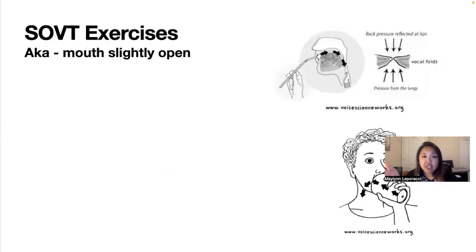Once you start to feel like the sound is starting to let go and you're not in control of where it wants to go into that higher range, that's when you use what I mentioned a couple of minutes ago — also known as semi-occluded vocal tract exercises, SOVTs. Basically, this is a fancy way of saying your mouth is partially open. That's what SOVTs are.